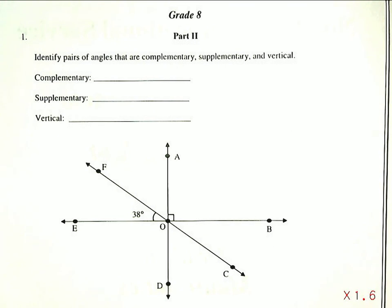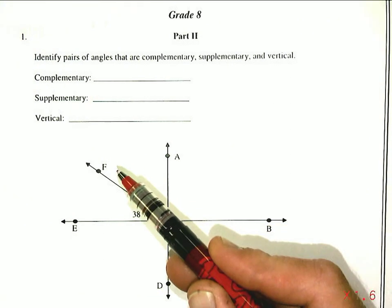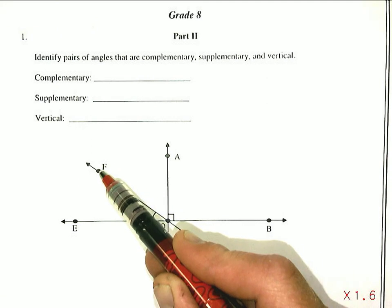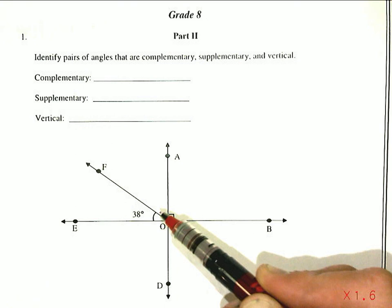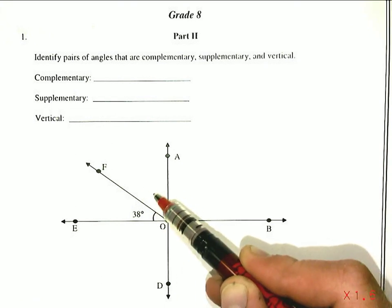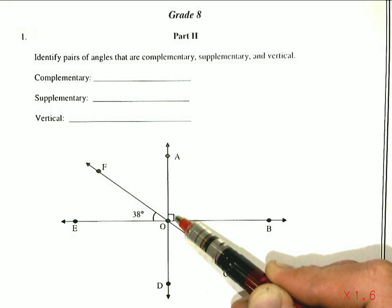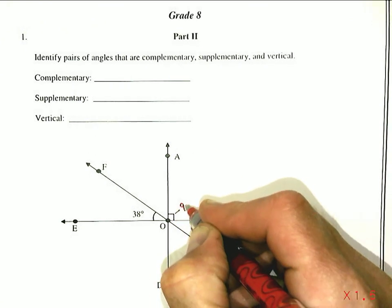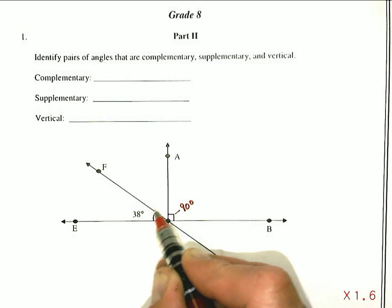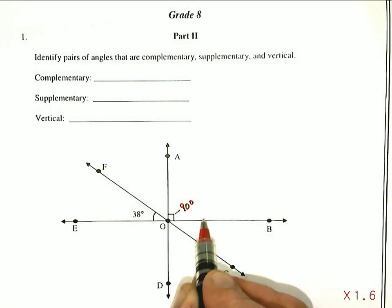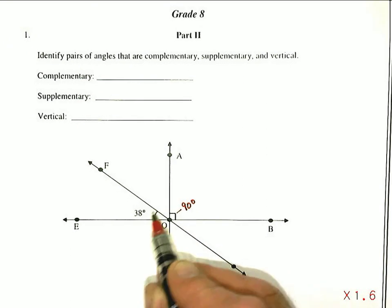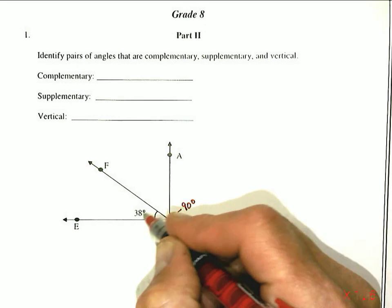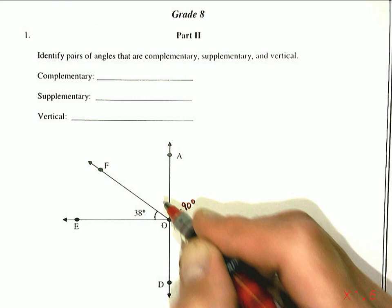Complementary angles are angles that add up to 90 degrees, and we're going to identify some pairs of complementary angles using three letters to represent an angle. Angle FOE, which is 38 degrees, and the one next to it together would add up to 90 degrees. You can see this little symbol in the corner — that symbol represents a 90 degree angle. So this whole angle would be 180 degrees, and what's in here has to add up to 90 degrees, which makes them complementary.